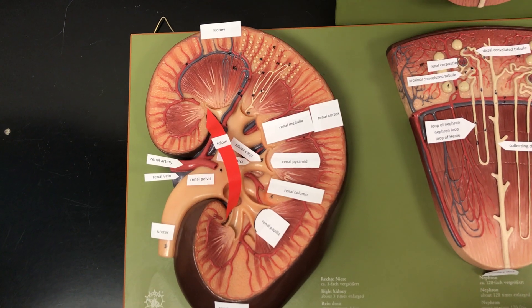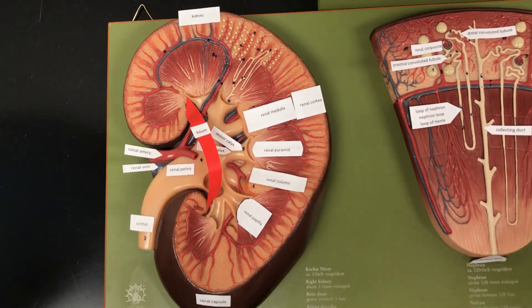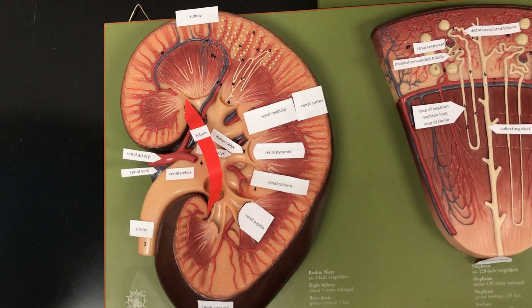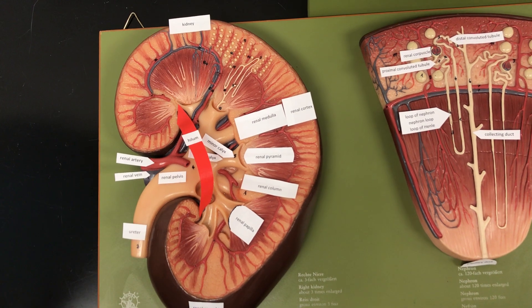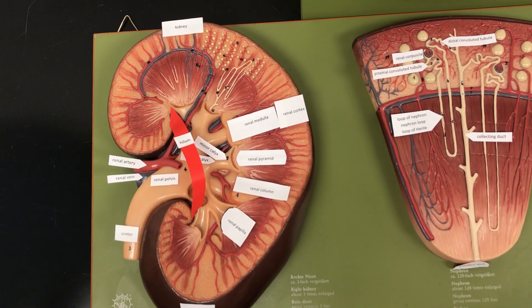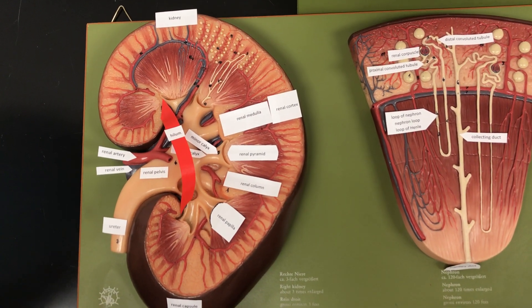This is a tour of the kidney and the urinary system. The kidney is a paired retroperitoneal organ that filters the blood and excretes urine.